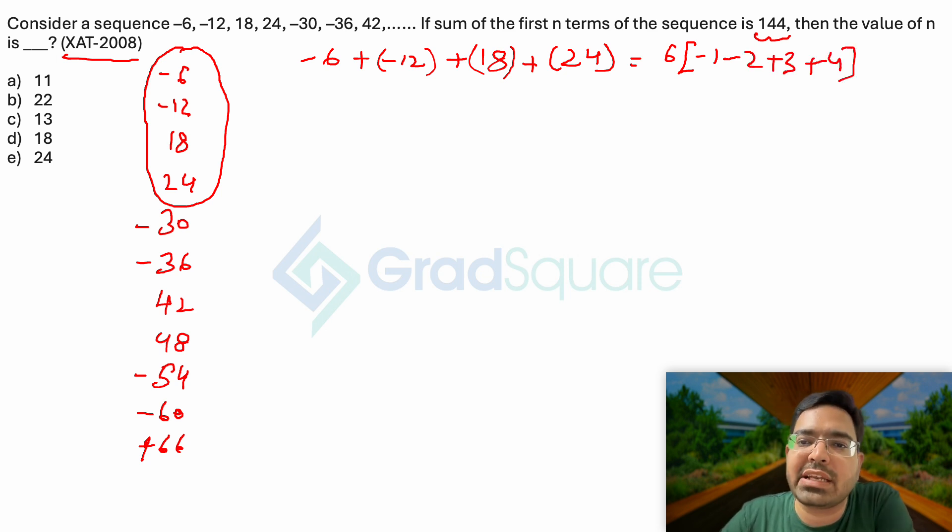If you observe this very carefully, 4 plus 3 is 7 and then minus 3 is over here, so this turns out to be 6 into 4. That's the sum I am getting for the first four numbers.